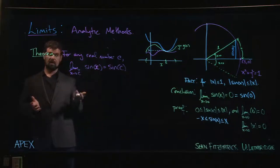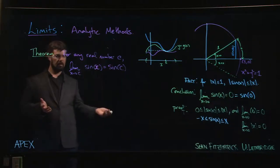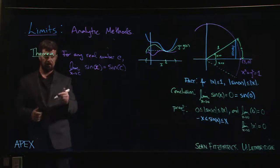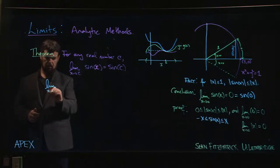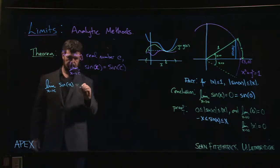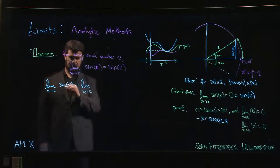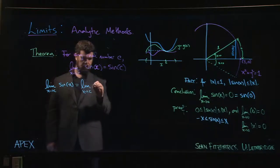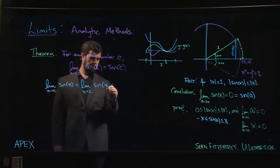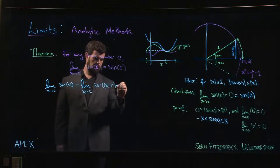How do we use that to get the value of the limit for sine at any other point? Well, we can do a little bit of a trick. What we can do is the following. So we can say that sine of x is the same thing as sine of x minus c plus c.